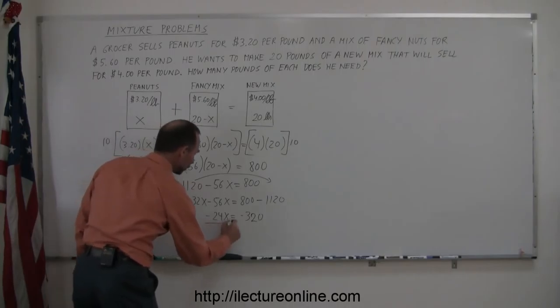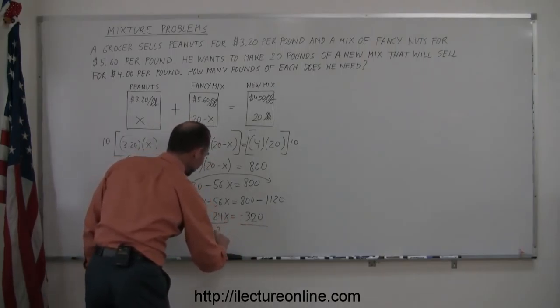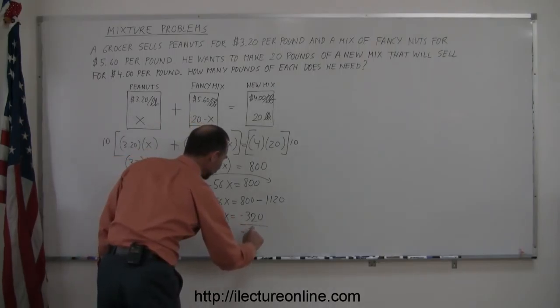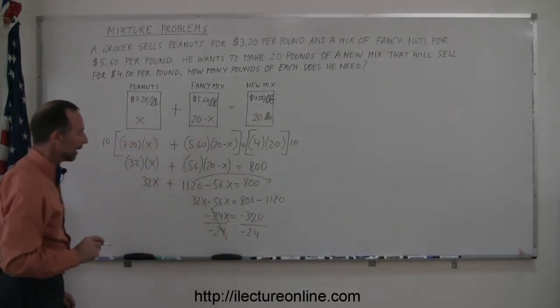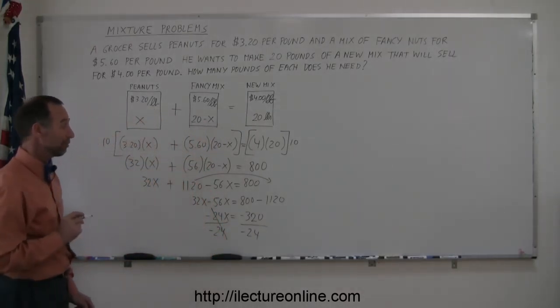32 minus 56, that looks like 24, so minus 24X equals 800 minus 1,120 is minus 320. And now dividing both sides by the coefficient of X, minus 24, it cancels out.